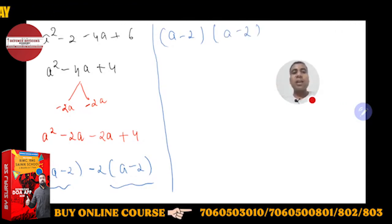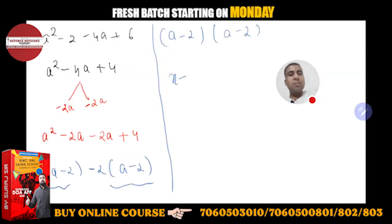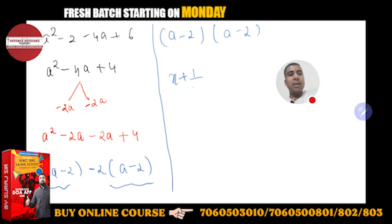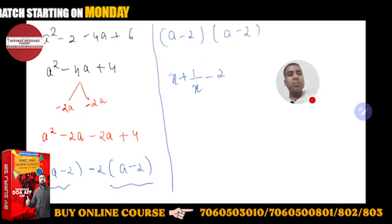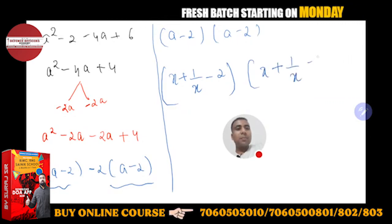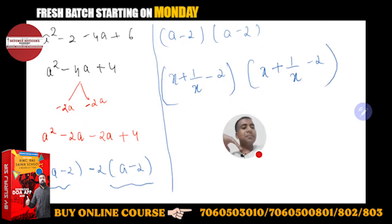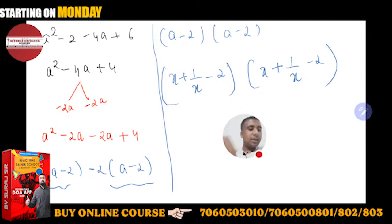Now what you have to do at last — you just have to put the value of a back. So what you have taken — the value of a is x plus 1 upon x. This will be x plus 1 upon x minus 2 in one bracket, aur doosra — x plus 1 upon x minus 2 in another bracket. So I hope yeh aap logon ko samajh mein aa gaya hai.